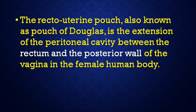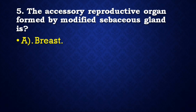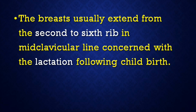Next question: The accessory reproductive organ formed by modified sebaceous gland is — breast, ovary, uterus, or vagina? The correct answer is breast. The breast usually extends from the second to sixth rib in the mid-clavicular line, and is concerned with lactation following childbirth.